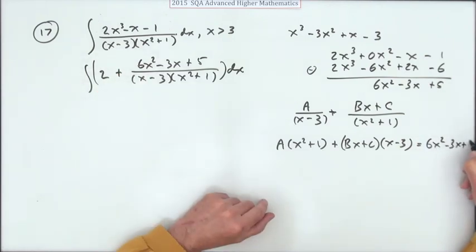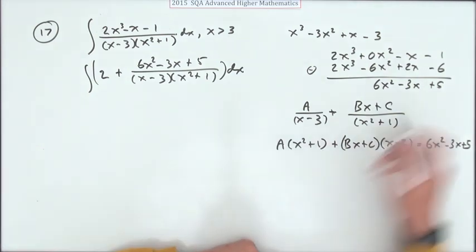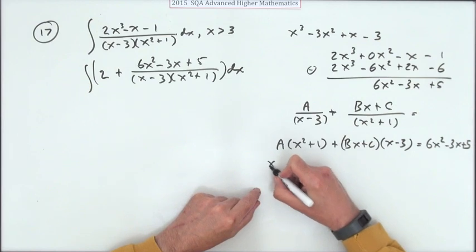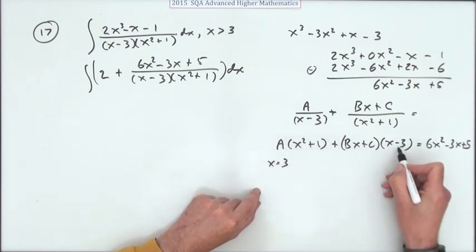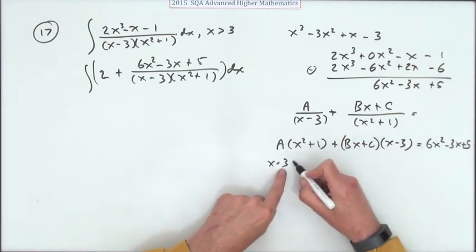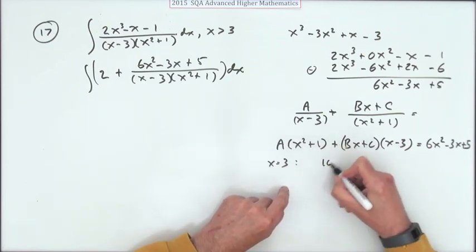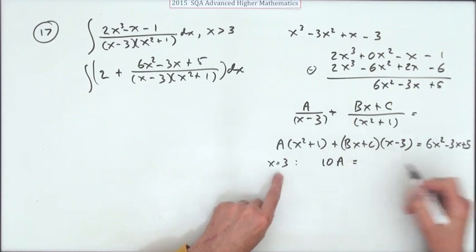We should have said that equals this thing here. I can use a knockout. I can let x equal 3 and that would knock out this term because that's 0. So if x is equal to 3, then I've got 3² and 1, that's 9 and 1. I've got 10 lots of A equals.